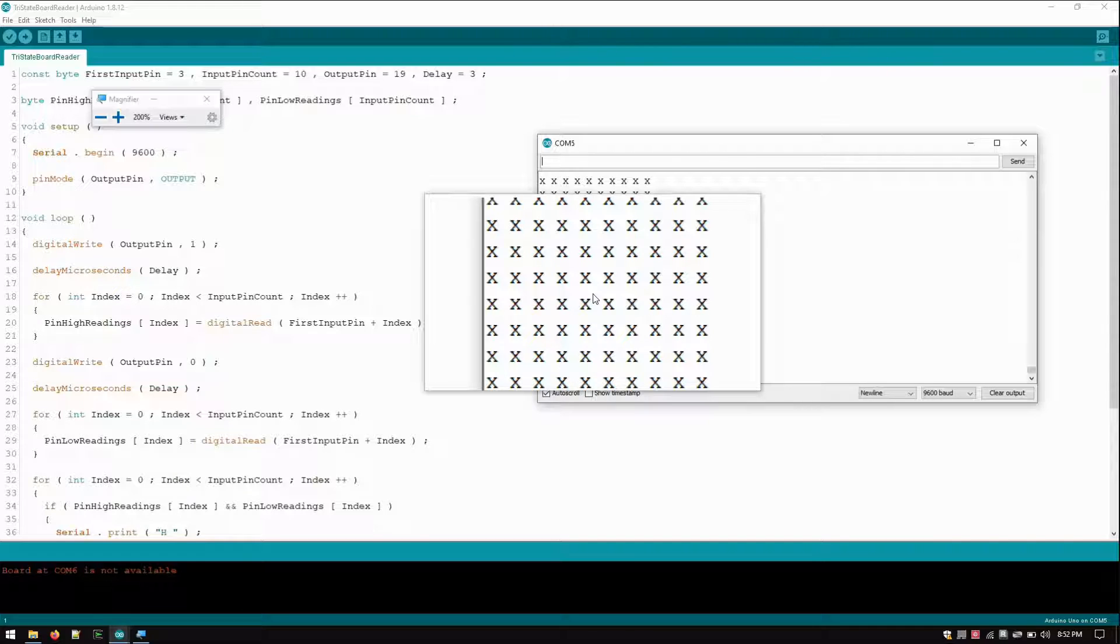I should have used Z, but X is fine. So if I go ahead and take a high voltage and touch one of the pins, you can see that one goes high as it's just continually monitoring. So as I touch different pins, it detects the high and then goes back to floating.